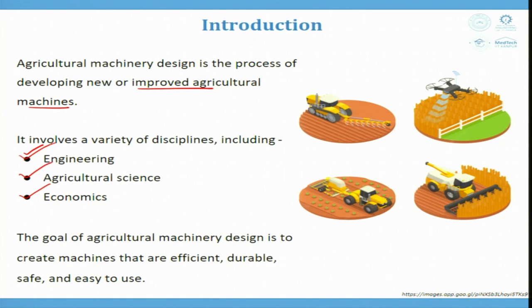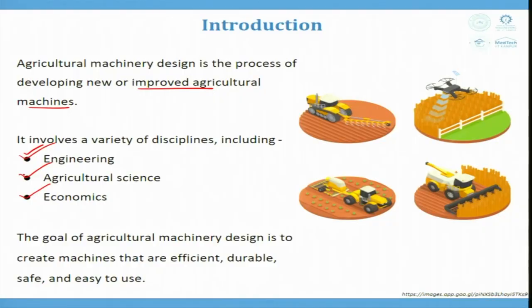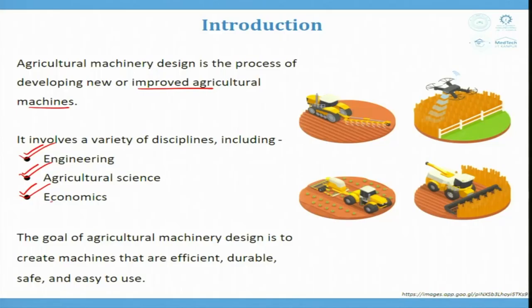Agriculture science covers how to increase yield and determines the depth of tools needed to sow seeds or remove seedlings. Economics addresses the business generated from agriculture — the total agro-industry's contribution to a country's development. India is a major agribusiness country, so economics professionals are also part of machinery design. The goal is to create machines that are efficient, durable, safe, and easy to use.